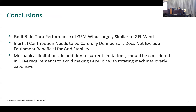The conclusions: fault ride-through performance of grid-forming wind is largely similar to grid-following wind — the performance during the fault is different but which events it can ride through are mostly the same. Inertial contribution needs to be carefully defined so it does not exclude equipment that is actually beneficial for the grid. If we set requirements of 7, 5, 3, or 4 seconds and someone tests in one of the edge cases, they could wrongly disqualify a turbine that is otherwise beneficial. Mechanical limitations in addition to current limitations must be considered, or we run the risk of making grid-forming IBRs overly expensive.